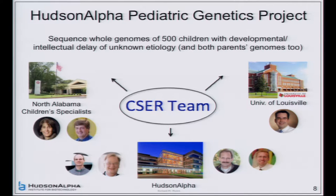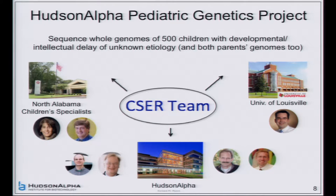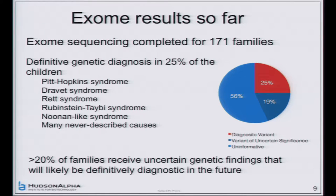This is led by Greg Cooper, myself, and Greg Barsh at Hudson Alpha, with a wonderful group of clinicians and bioethics folks. Our goal is to sequence 500 trios — both parents and one child. We started with exome sequencing, and about 75% of those sequenced so far were exomes. The diagnostic rate is really high — at least 25% definitive, another 19-20% that are almost surely right. We're returning results to about 40% of these families, which is remarkable.